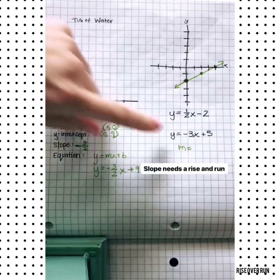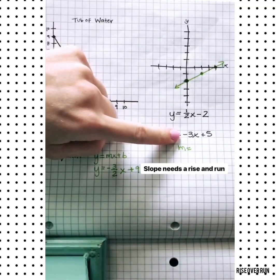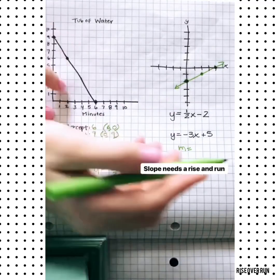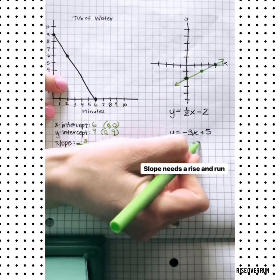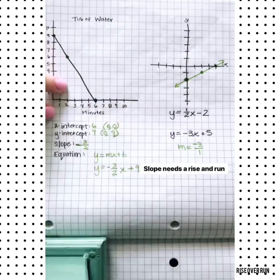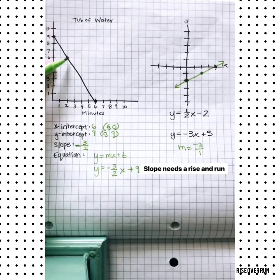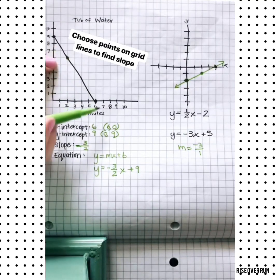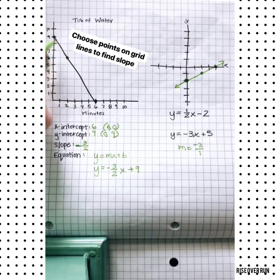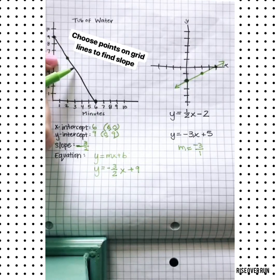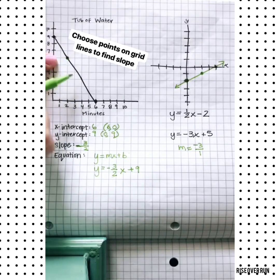Here are a couple things to look out for. If m is negative 3, we always need a rise and a run. So you want to turn that into a fraction by putting it over 1. Another mistake some students might make is when you're calculating slope of a line, be sure that your points are on grid lines. You don't want to use a point that's in between grid lines because it's hard to know the exact value.